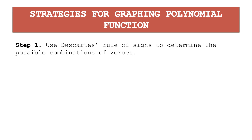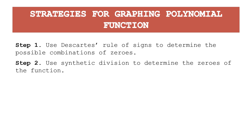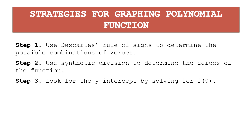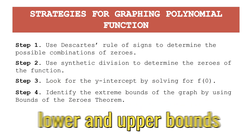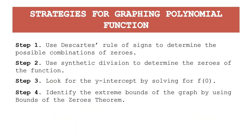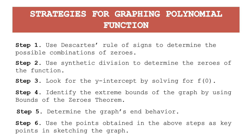Step one: use Descartes' Rule of Signs to determine the possible combination of zeros. Step two: use synthetic division to determine the zeros of the function. Step three: look for the y-intercept by solving for f(0), where x equals zero. Step four: identify the extreme bounds of the graph — the lower and upper bounds of the zeros. Step five: determine the graph's end behavior. Step six: use all the points obtained in the above steps as key points in sketching the graph.